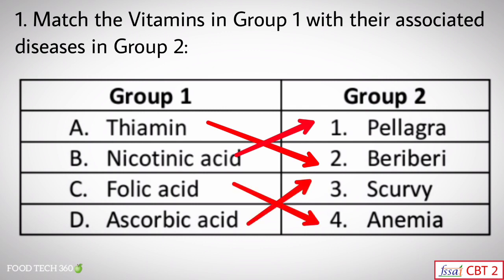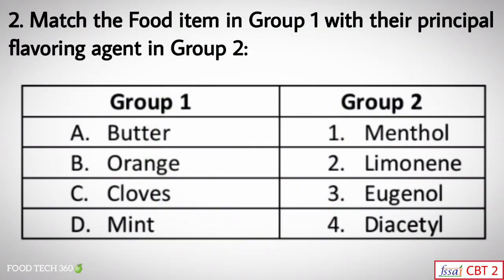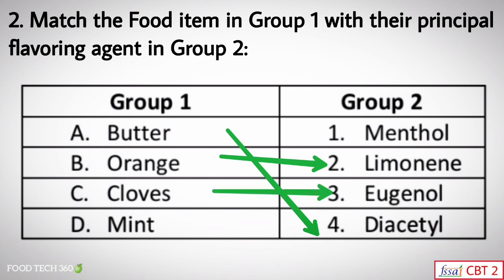Question number two: Match the food item in Group 1 with their principal flavoring agent in Group 2. Group 1 contains food items: butter, orange, cloves, and mint. Group 2 contains the flavoring agents: menthol, limonene, eugenol, and diacetyl. The flavoring agent of butter is diacetyl, of orange is limonene, of cloves is eugenol, and of mint is menthol.